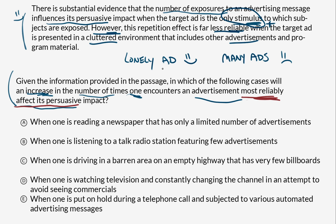We're looking for the least cluttered situation. When one is reading a newspaper that has only a limited number of advertisements — there's a limited number of advertisements, but we're also reading a newspaper, which would be program material. Radio, television, newspaper articles — that's getting in the way of the ad. So this could be it. Let's see how cluttered or uncluttered the other ones are.